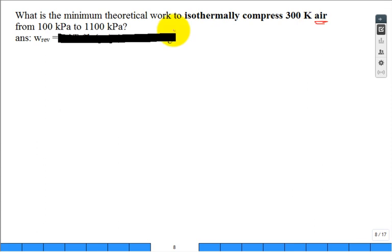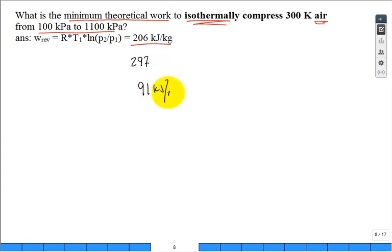The next one has the same pressure change, still minimum theoretical work, but what word has changed? It's not adiabatic, it's isothermal. Did we do this one? Yes. So what did it come out to be? 206. Right away, the difference between 297 and 206 is 91 kilojoules per kilogram. That's significant, it's a big deal.